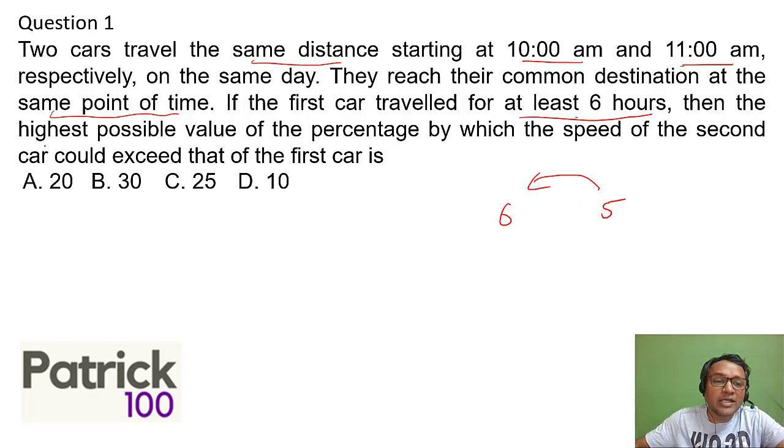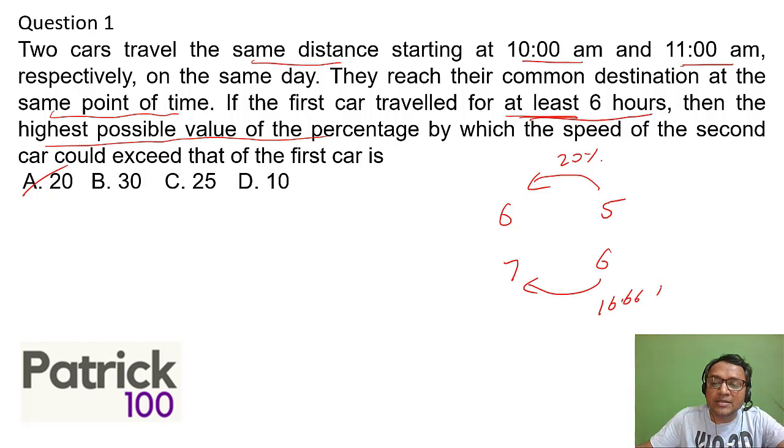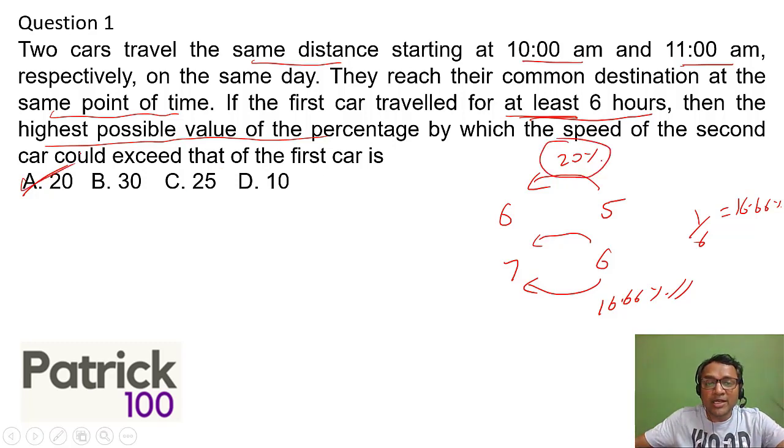So automatically five to six, we want the highest possible value of percentage increase. You can make out twenty percent. You can straight away mark the answer. If you're not sure because they said at least six and you want to still be confirmed, you can take a higher value seven and six. You can make out six to seven is sixteen point six six percent. You should know one by six. Now the increase out here is one out of six, which is sixteen point six six percent. You can see the percent is decreasing and we want the highest possible percentage so twenty percent is highest.